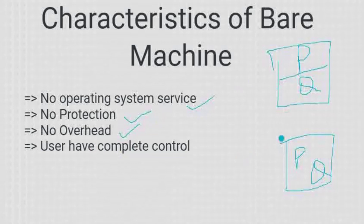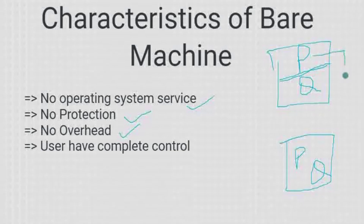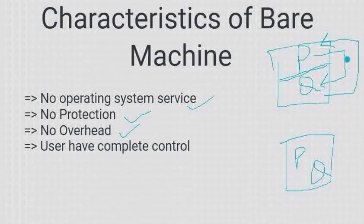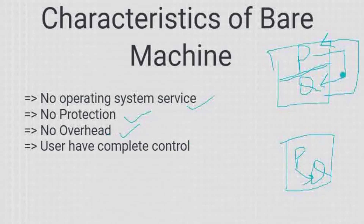Next characteristic — no overhead. Overhead क्यों नहीं होगा? क्योंकि सारा data एक जगह पर मिल जाता है। अगर P और Q दो processes execute हो रही हैं और partition होता, तो P को Q से data चाहिए होता तो controls transfer होते, request होती, response आता — इस पूरे duration में extra time, extra efforts, extra logics लगते — यही overhead है। But bare machine में कोई partition नहीं है, तो P को Q का data directly access हो जाता है — same memory location पर reside करता है। So no overhead.